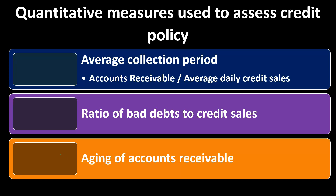Finally, there's the aging of accounts receivable — a standard report in accounting departments that breaks out AR by how old it is: current, 30 days past due, 60 days past due, 90 days past due, and so on. By analyzing how old the receivables are and how much is past due, we can assess the quality of our accounts receivable, estimate likely bad debts, and consider what changes to our credit policy might help us get paid sooner and reduce the accounts most likely to become bad debt.